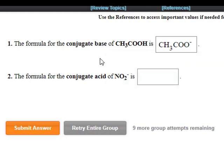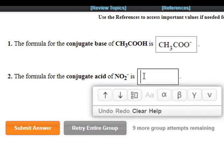Remember, if you subtract positive 1 from 0, it equals negative 1. The formula for the conjugate acid of NO2 minus, well, we're adding an H, so HNO2. Because we're adding a positive, that positive is going to cancel the negative.